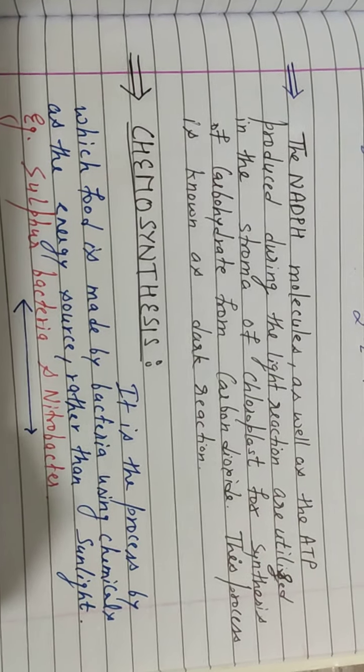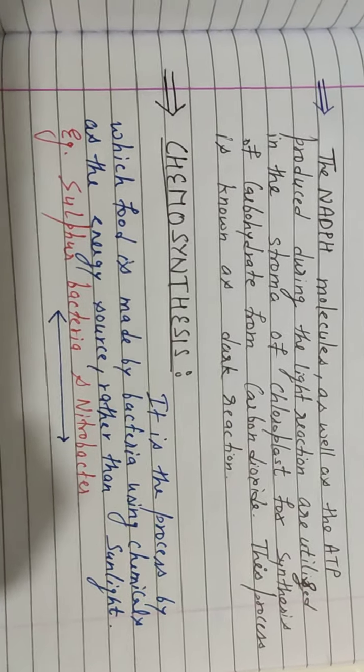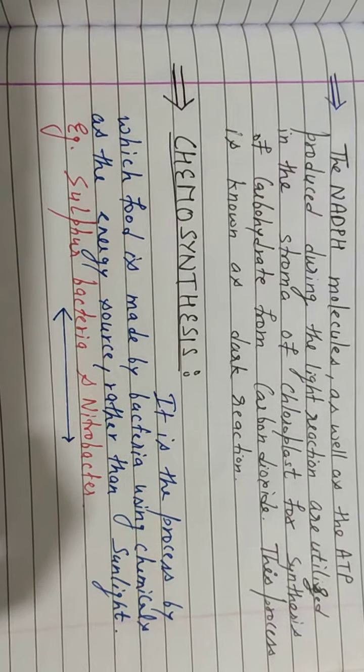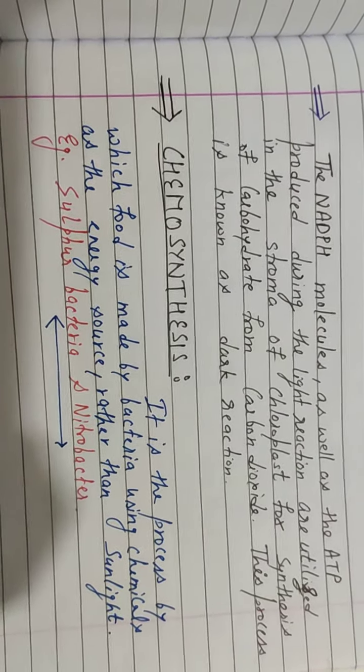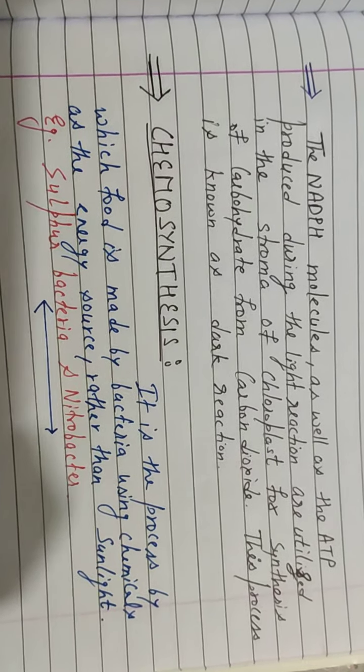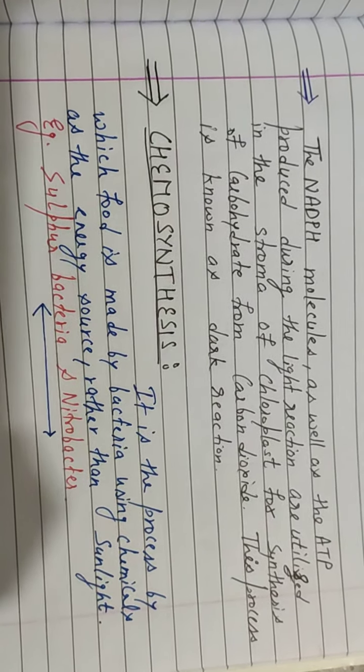Bacteria use chemicals for their food. Examples are sulfur bacteria and nitrobacter. Sulfur bacteria use sulfur chemicals for their food. Nitrobacter fixes nitrogen. That's all for today, thank you.